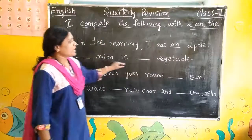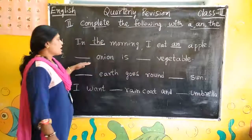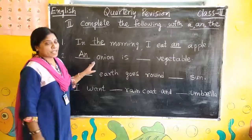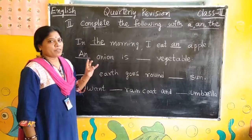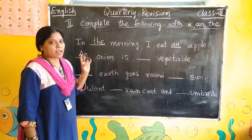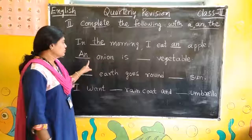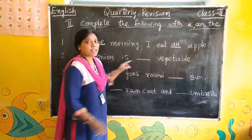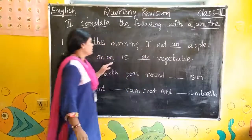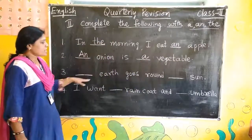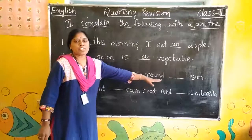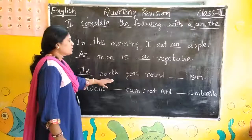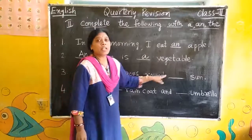An onion is a positive. Already you have learnt 'a' and 'the' — where 'a' will come, where 'an' will come. Third one: the earth goes round the sun. T-H-E: the earth goes round the sun.